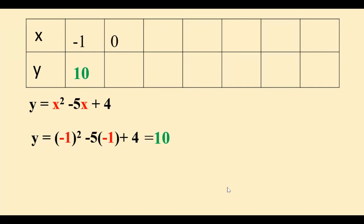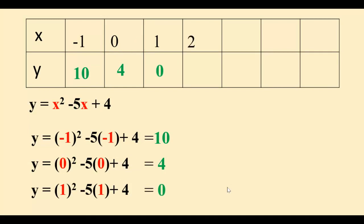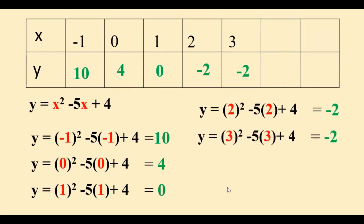Next value is 0. Substituting 0 in the equation gives us 4. Then 1, substituting 1 gives us 0. Then we move on to 2. Once we substitute, we get negative 2. Then we move on to 3. Substituting gives us negative 2.